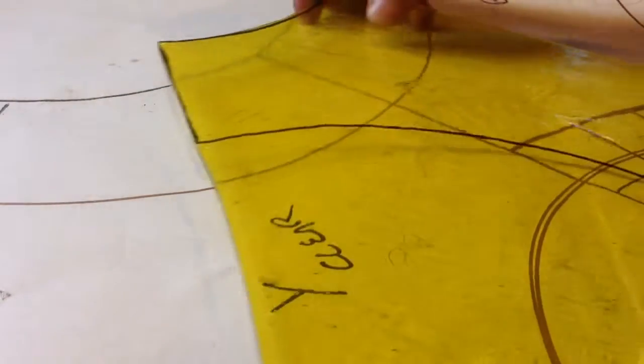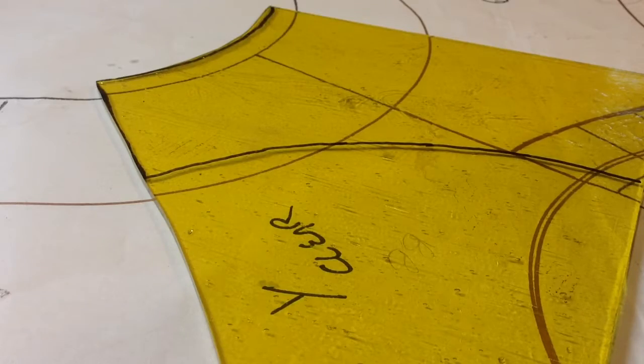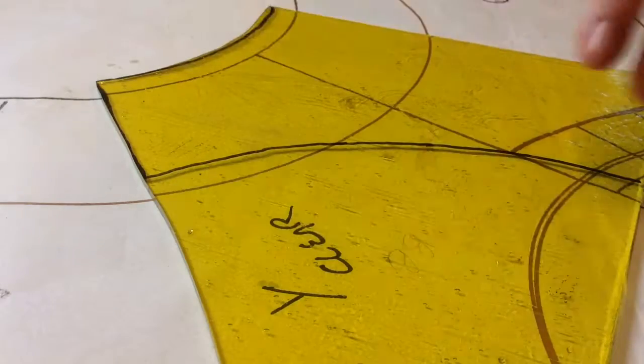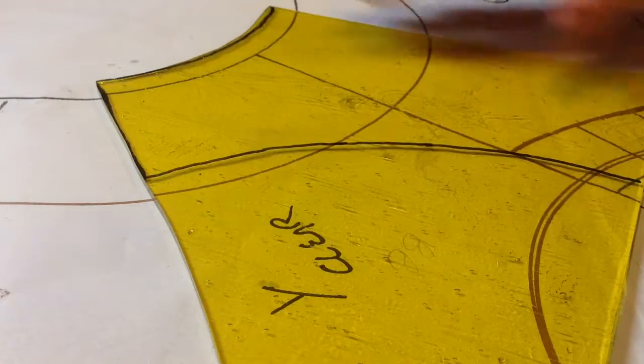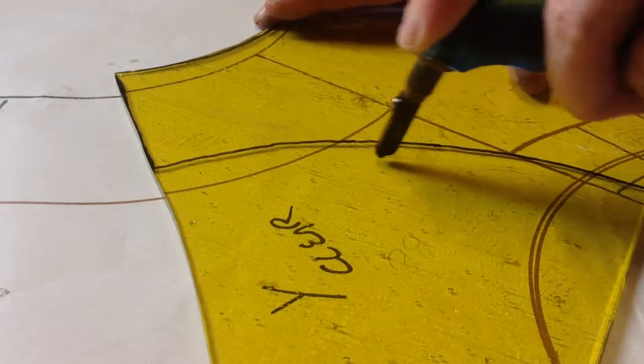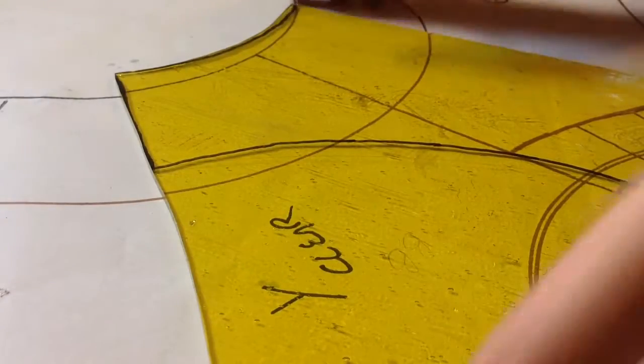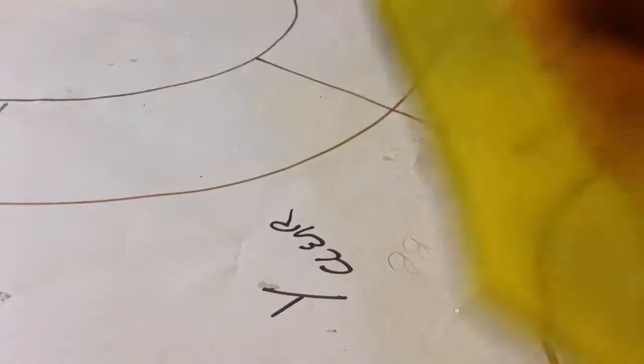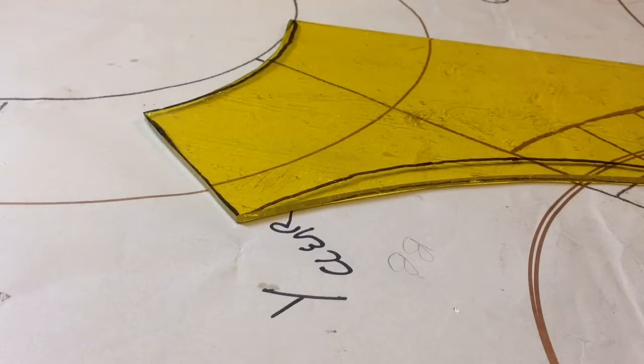When you're cutting curves, it's okay to cut out a little bit and then do little bites, because you don't want this to crack. Sometimes your glass will crack in places you don't want it to, because it's too sharp a curve.